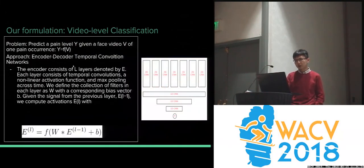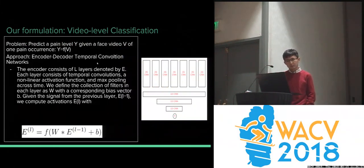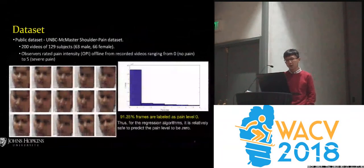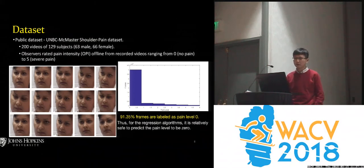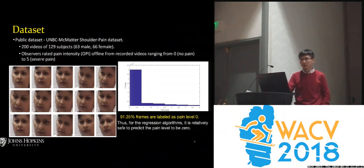The encoder-decoder Temporal Convolution Network works in the following way: the encoder consists of certain layers. For the experiments, we have a dataset generated by physicians at Johns Hopkins Hospital, but for the sake of privacy, we tested on a public dataset created by McMaster University.